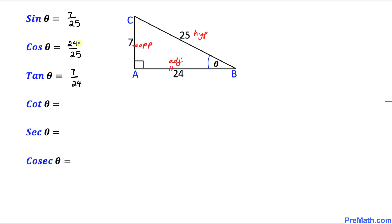Once we figured out these three trig ratios, the rest is really easy. Always remember that tangent and cotangent, they are reciprocal to each other. That means whatever this fraction is, we just simply flip it over. So it means 24 over 7 is our cotangent theta.